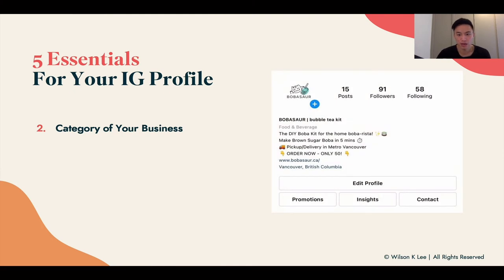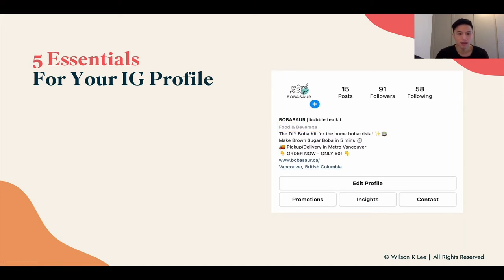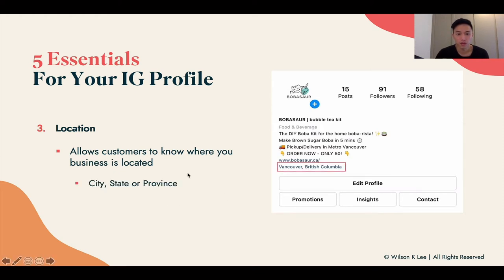Next up, the category of your business — tell your customer what type of business you are. For example, food and beverage. Make sure to select it when you are creating your Instagram profile; don't leave this area blank. Next up is your location, which allows your customers to see where you're from. Make sure to include the big city and the province that you're in. Don't skip this section, because it's very important for people to understand where you are — if they want to buy from you, they want to buy from someone somewhat local.